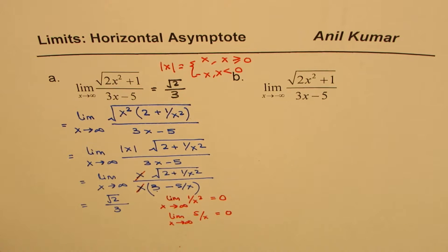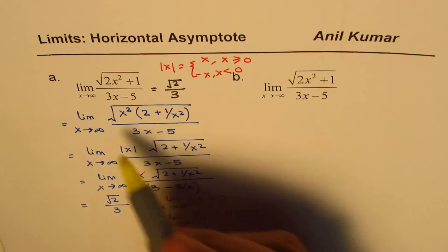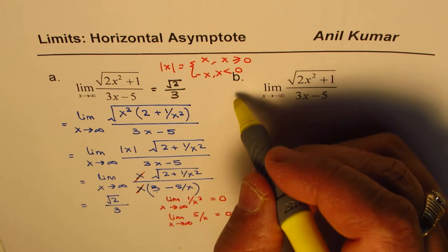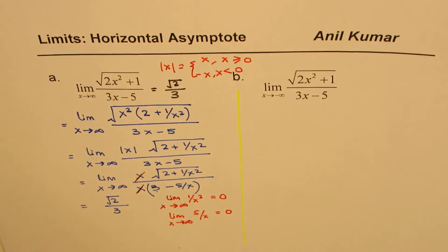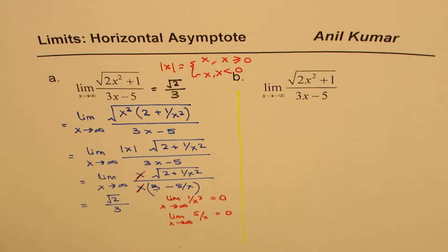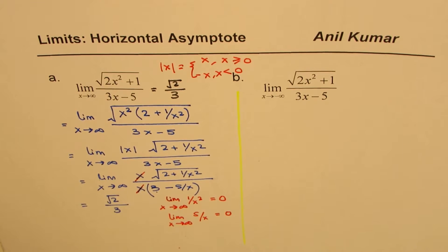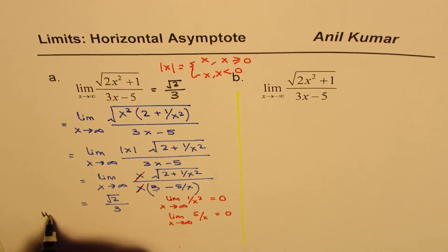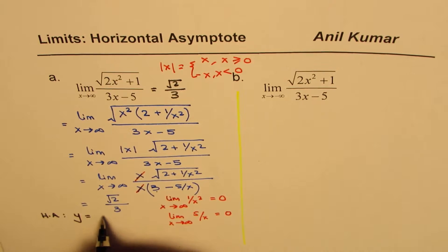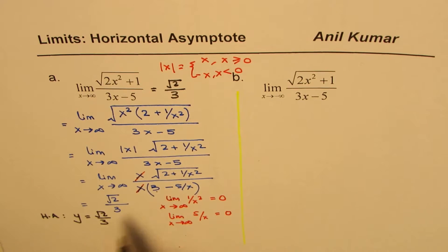That is how we find the limit as x approaches positive infinity. We also have a horizontal asymptote whose equation is y equals square root of 2 over 3. This is in addition to finding the limits.